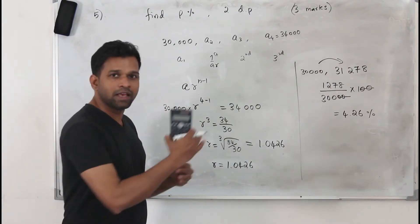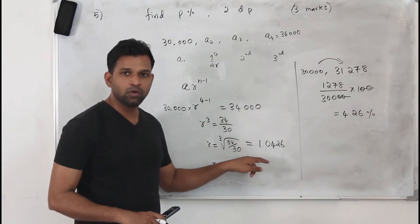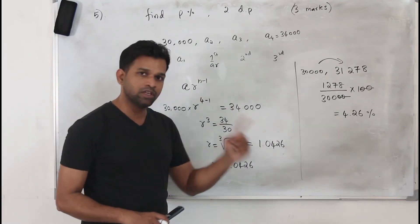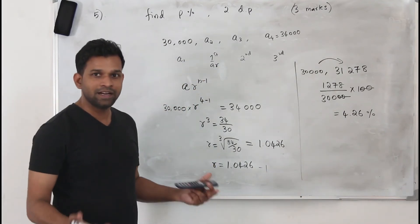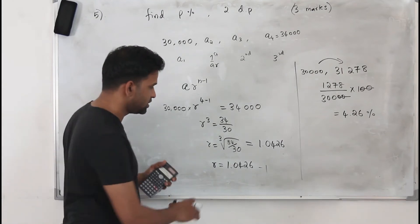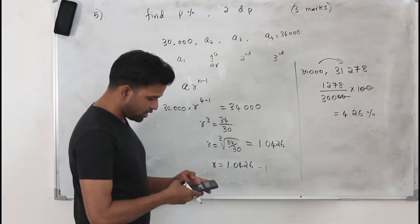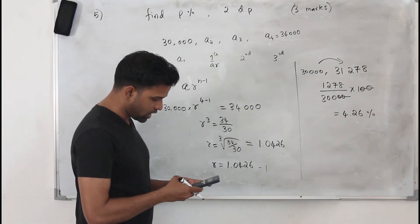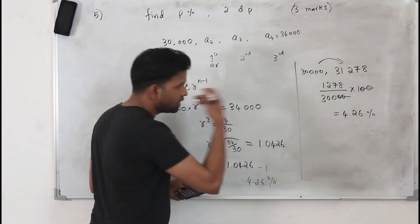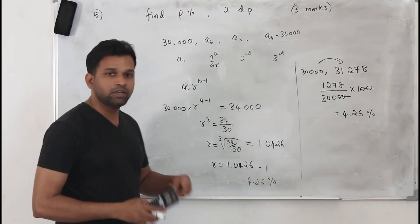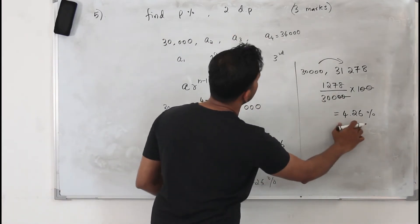Another method: it is the same as compound interest — every year it is increasing. Once you have the common ratio, subtract 1 from it and multiply by 100. That gives your percentage increase. So 1.0426 − 1 = 0.0426, and 0.0426 × 100 = 4.26%. You can use either method, but do not write the common ratio as your answer. They want the percentage increase written to two decimal places: 4.26%.